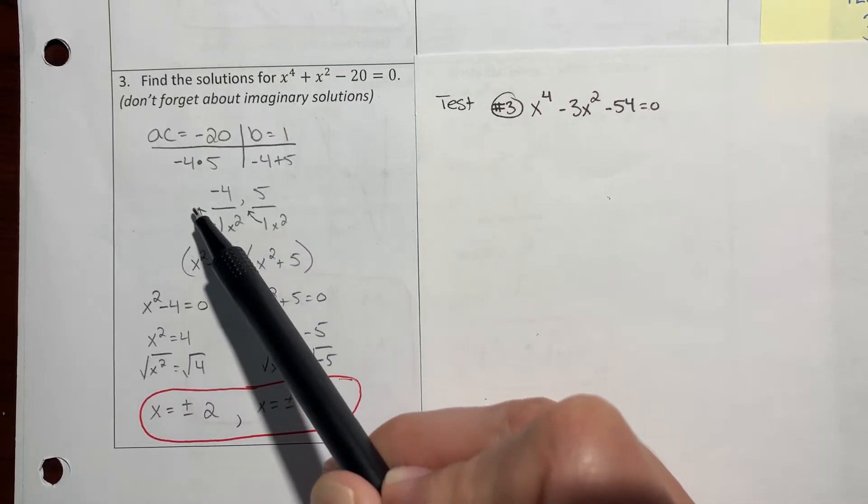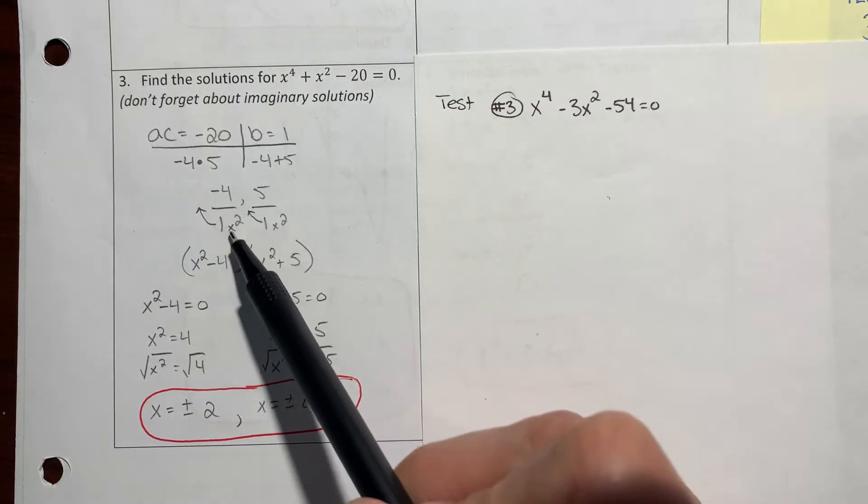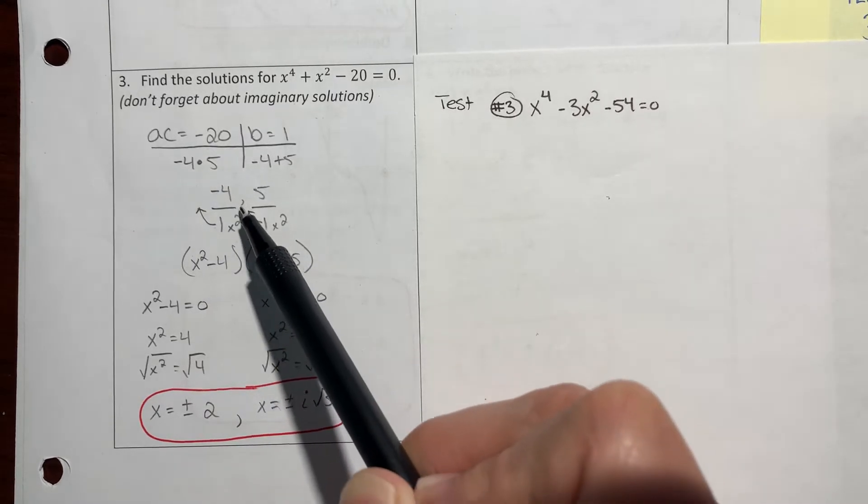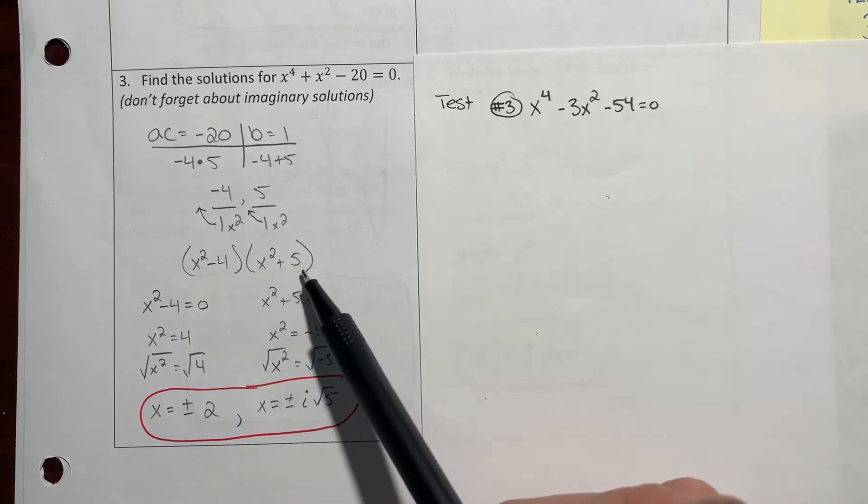And then this arrow is for sliding it to the front. So I'm going to slide this 1x squared to the front and it'll say x squared minus 4, and slide this to x squared plus 5. That's what I have written right here.